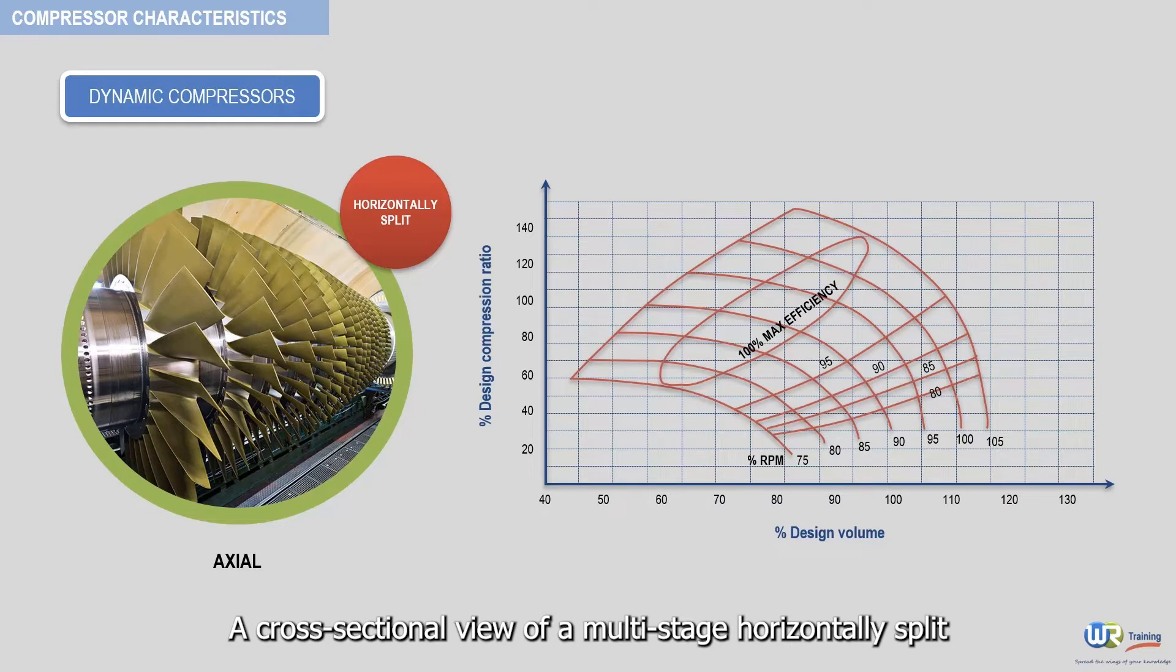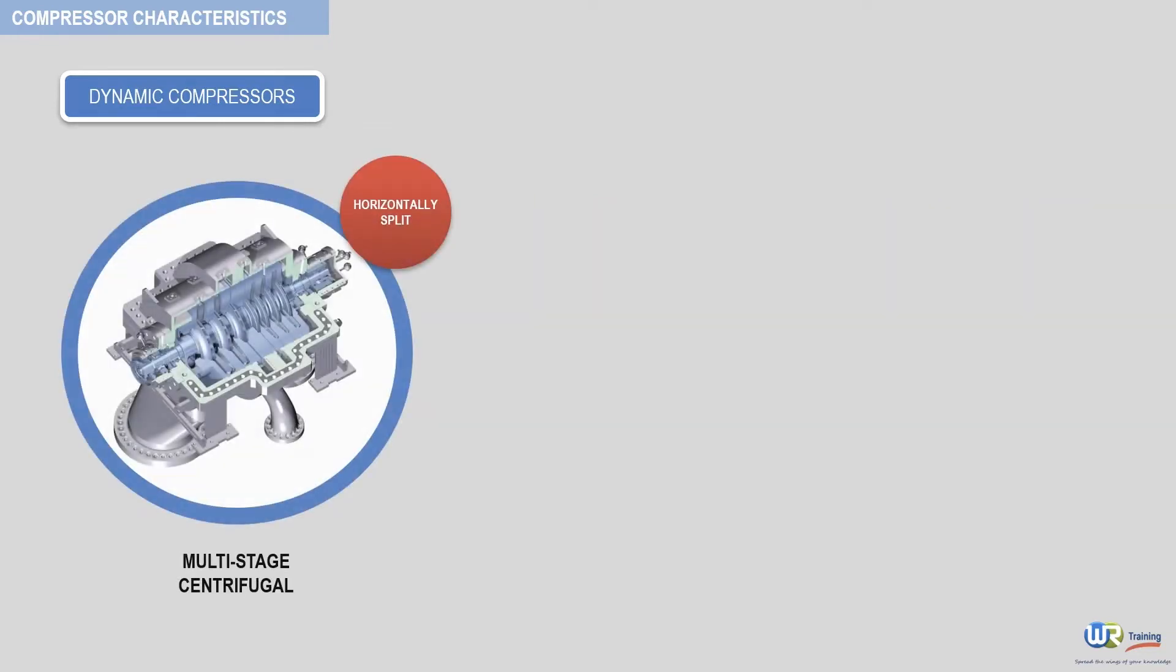A cross-sectional view of a multi-stage horizontally split centrifugal compressor is seen here. Recall, a centrifugal compressor is also known as radial compressor because the exit flow of the gas from the impeller is radial, as opposed to axial. A typical example of a centrifugal compressor performance curve is seen here.